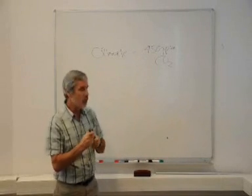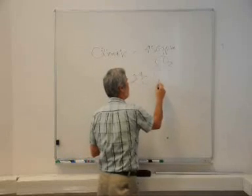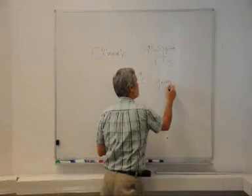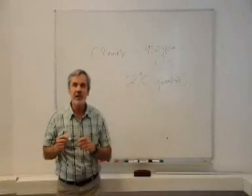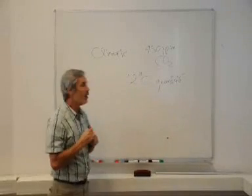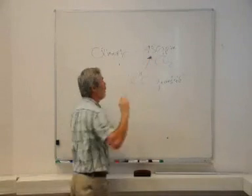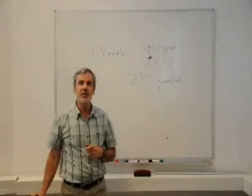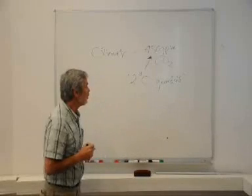And many people will have heard of the 2 degree C guardrail. And that is what the European community has now defined as where dangerous climate change lies. It corresponds to roughly 450 parts per million of CO2. We're already at 385. So we're approaching the boundary.